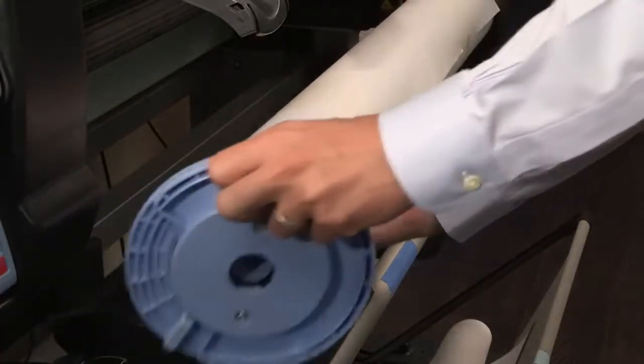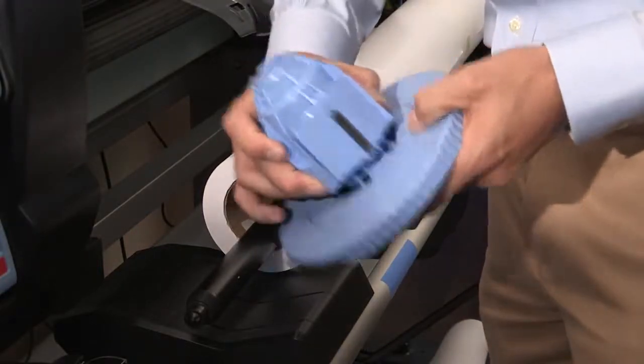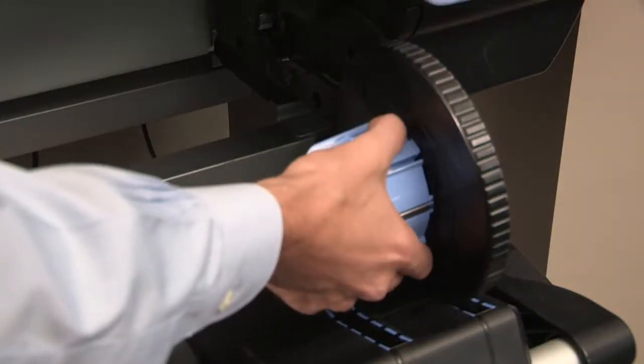Removing the adapters is as easy as putting them on. Press the two tabs on the spindle hub and slide the adapters off.